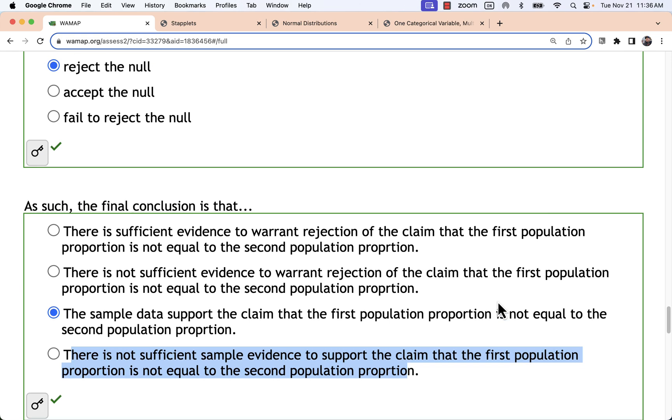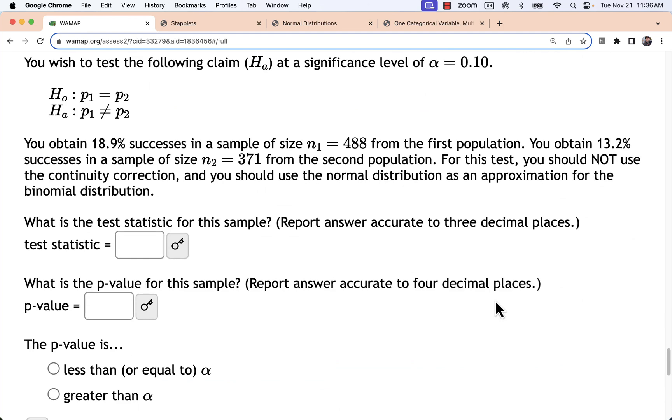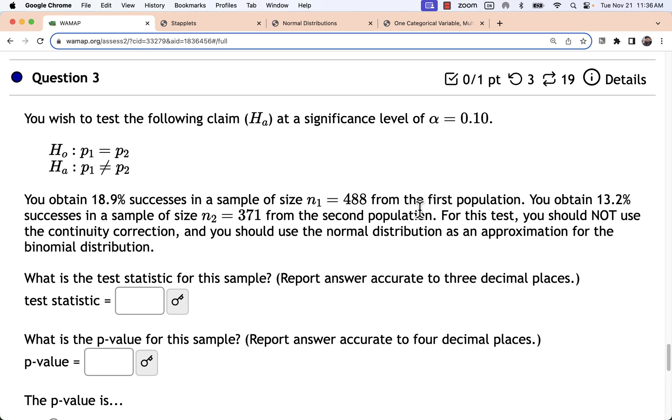Now this problem could be a little different if we move ahead and look at number three. In number three the way this changes is we're given a percentage. Now actually if we were to be doing this all with calculations that might be helpful. But we're putting in precise observations into Staplet of the number of successes and the number of failures. This percentage is likely something that was rounded. And so it's not as precise as if we have the whole number of successes and whole number of failures.